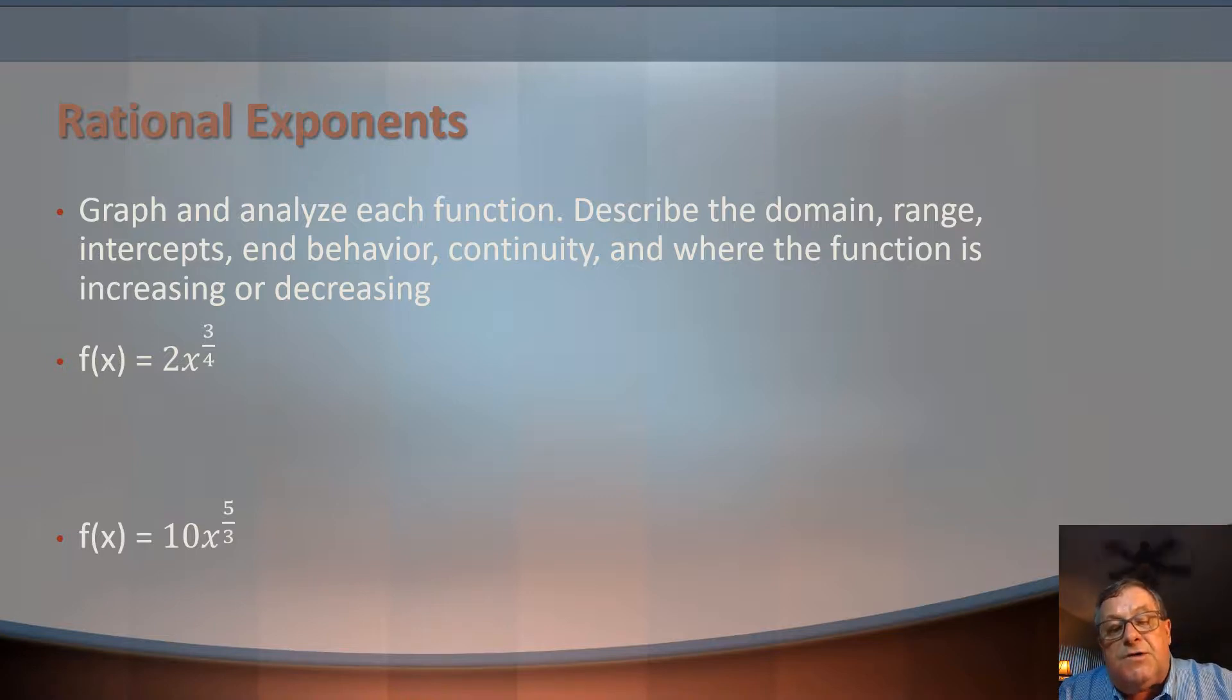In this first function here, we got f of x equals 2x raised to the power of 3 fourths. And this really is equal to 2 times the fourth root of x cubed. So in a rational exponent, what's in the denominator is the root we're taking, and what's in the numerator is what power we're raising the term to underneath the root.